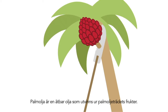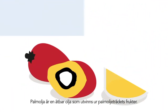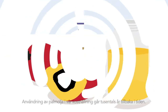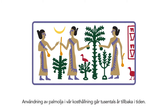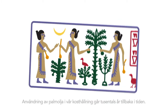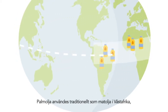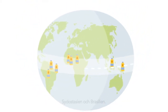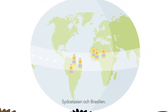Palm oil is an edible oil produced from the fruits of the palm oil tree. The use of palm oil in our diet dates back thousands of years. Traditionally, palm oil was used as a cooking oil in West Africa, Southeast Asia and Brazil.